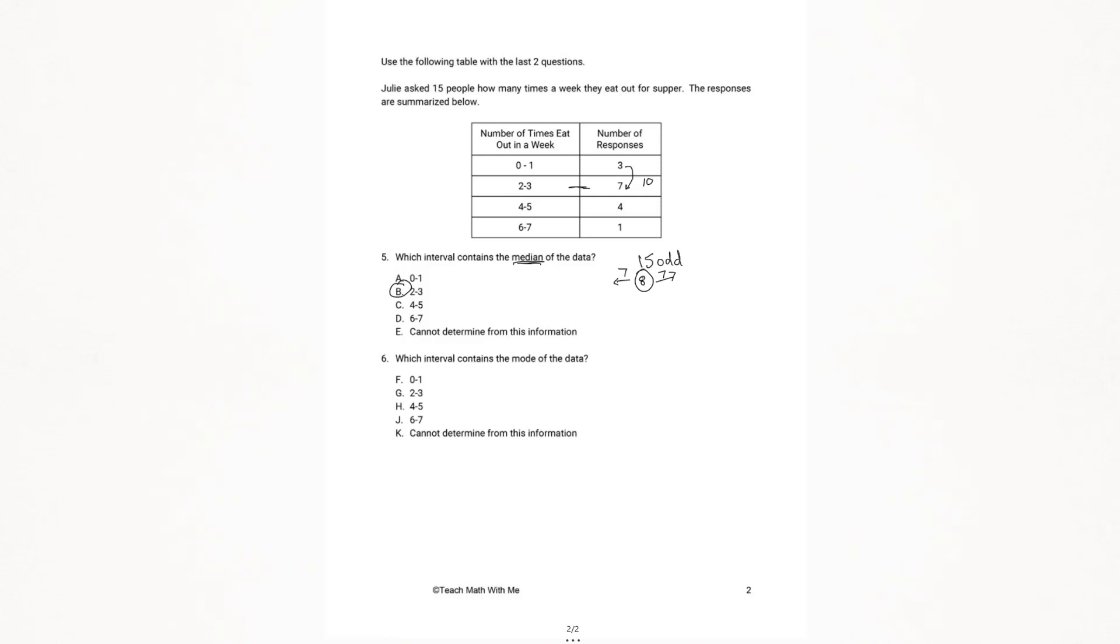Let's take a look at question six. Which interval contains the mode of the data? We're looking at mode this time. Mode is the value that occurs the most often. So again, we refer back to our table. And we're going to look at the number of responses. We're looking for which interval had the most responses for that interval. And we see seven is the largest number. More people responded with this interval. So that's going to be our mode interval two to three, which is answer choice G.